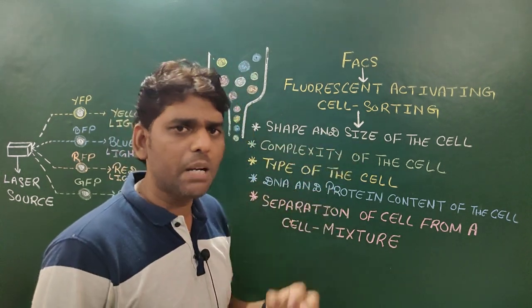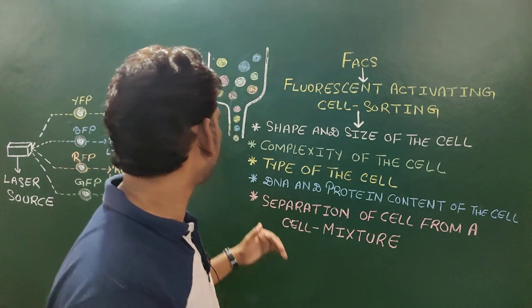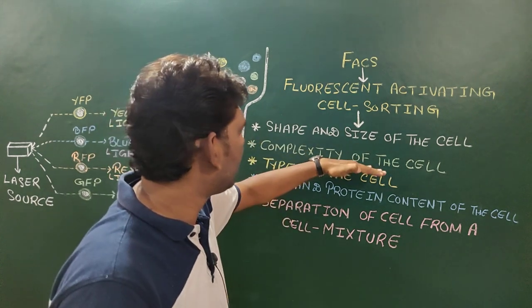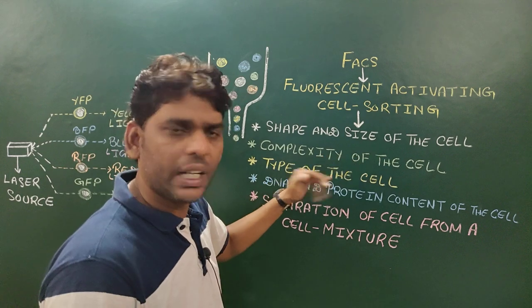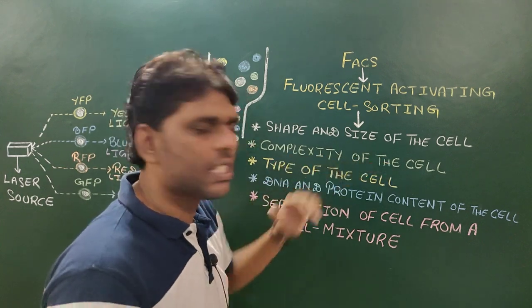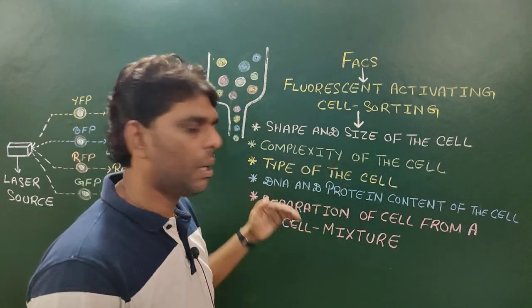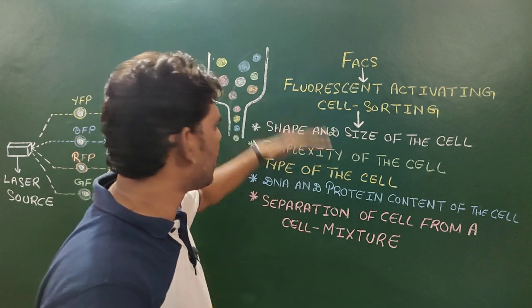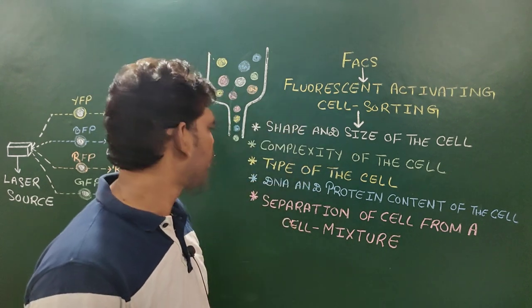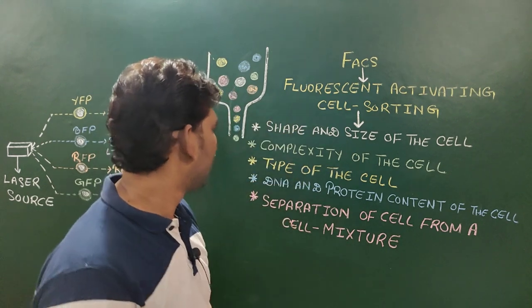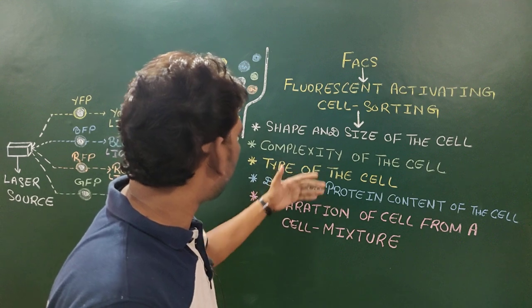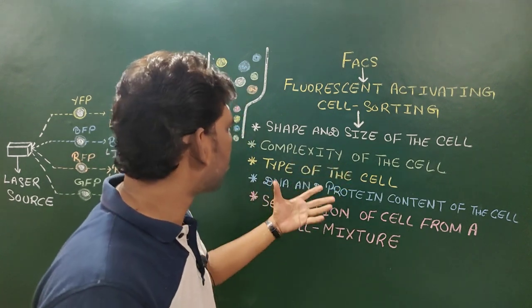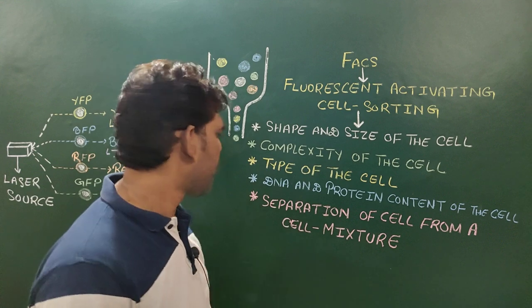In FACS, the shape and size of the cell is determined by the scattering of the laser beam in the forward direction, whereas the complexity of the cell is determined by the scattering of the laser beam in the sidewise direction. Determination of different types of cells is based on the fluorescent property of the cell.